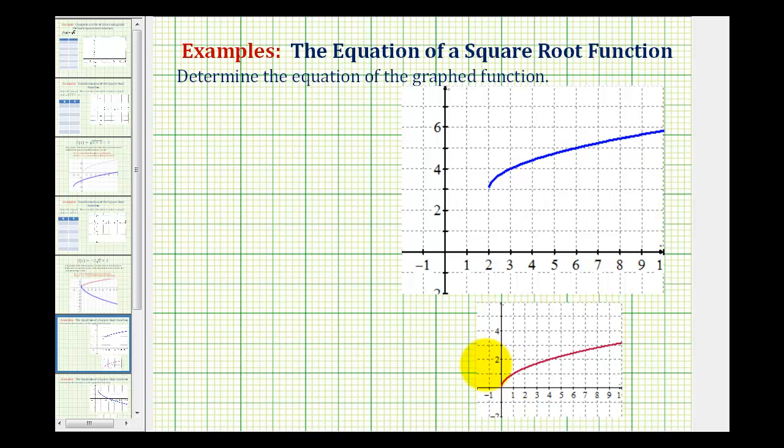So for example, if we consider this point here with coordinates, and let's say this point here with coordinates, and now we'll identify the corresponding points on the blue square root function.